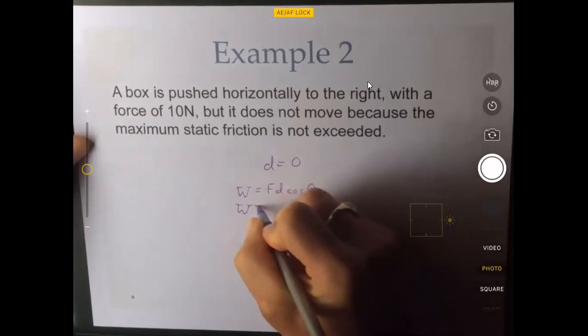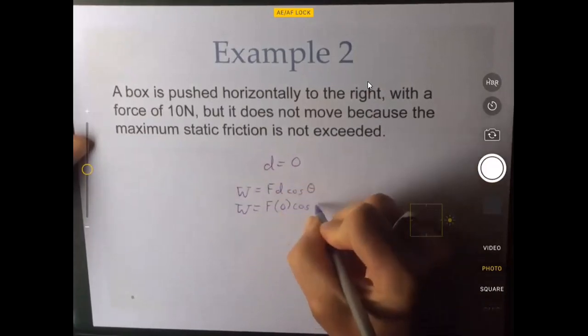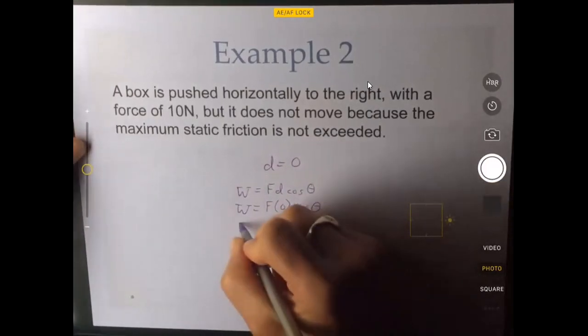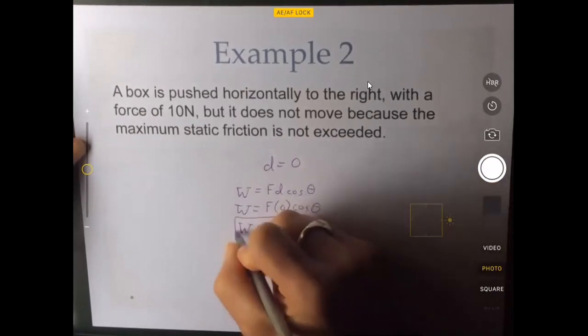So the work is equal to f, which I could fill in, but I don't need to because it's something times zero times something. And regardless of what the first and third things are, that's going to come out to zero.